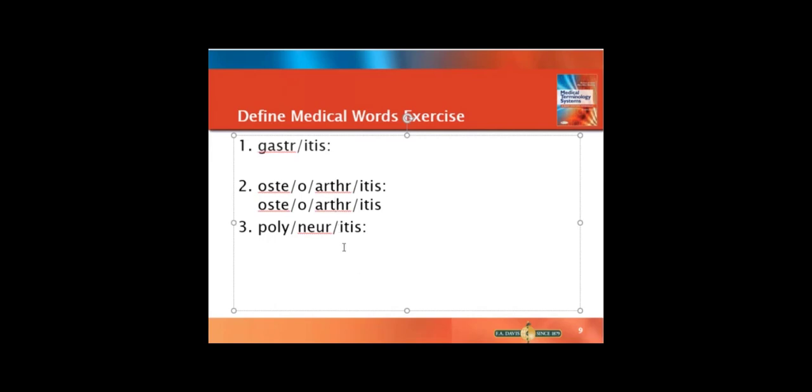All right, last try. Polyneuritis. Y'all, I bet you have itis now. Inflammation or infection, go to the front of the word. This happens to be a prefix. Poly means many. So that's an inflammation of many, and neuro is nerves. Polyneuritis means inflammation of many nerves. Use that same technique every time.